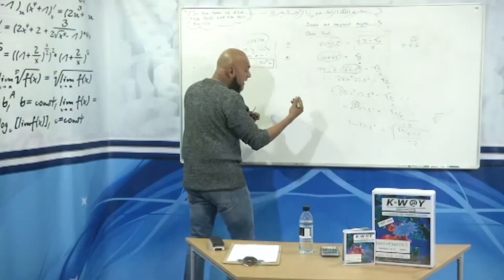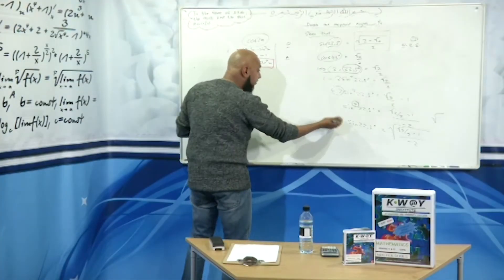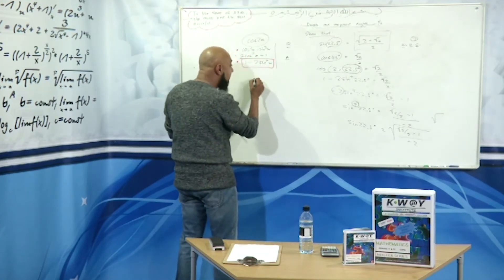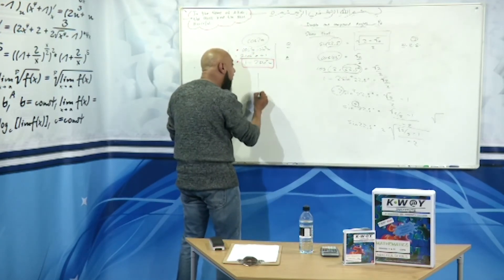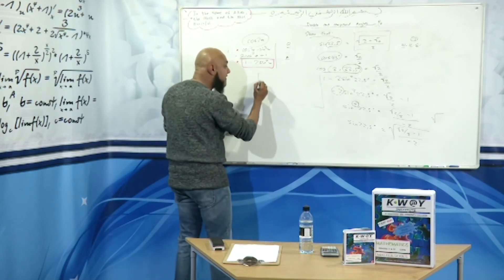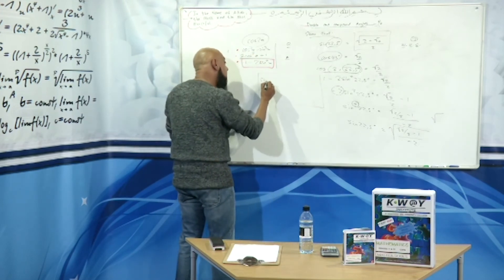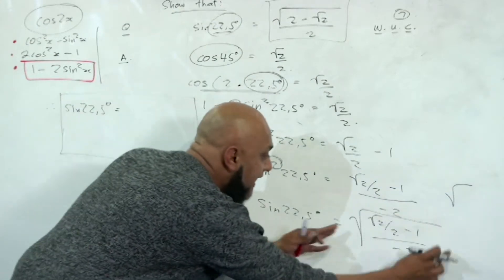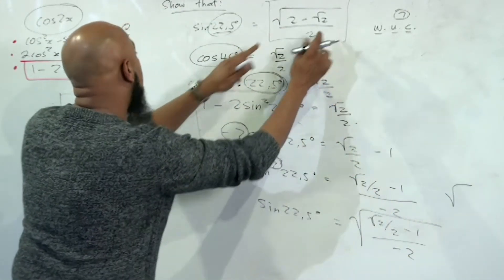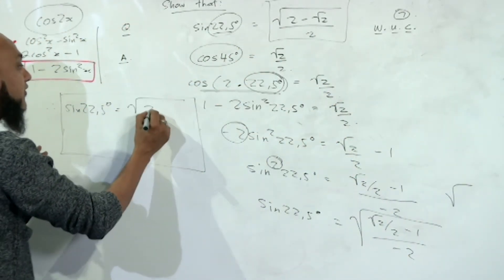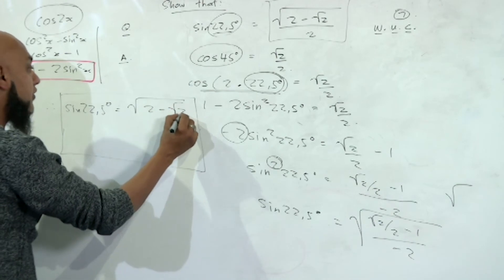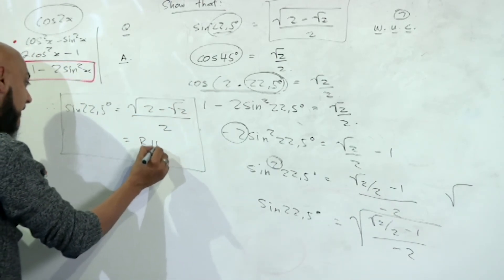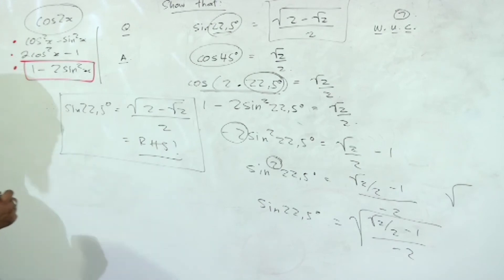Moving up to give ourselves space — therefore, the final answer: sin(22.5°) is equal to, when you calculate that on your calculator, the square root of (2 − √2), all over 2 — which equals the right-hand side. And there we go.